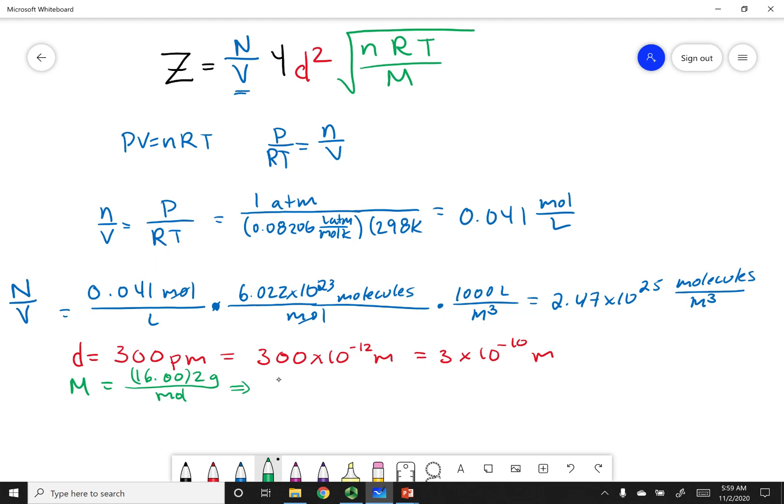Now I can put all of this together into my z equation. So z equals 2.47 times 10 to the 25th molecules per cubic meter. This is times 4. And then I get my diameter, 3 times 10 to the negative 10th meters. And I'm going to square that term.